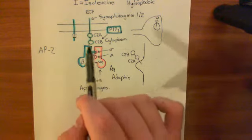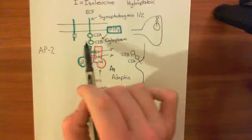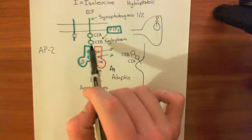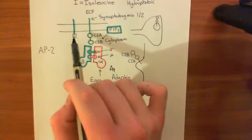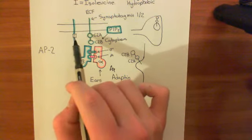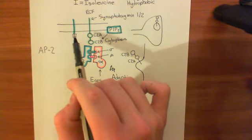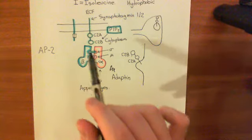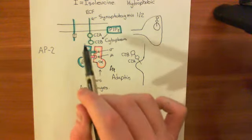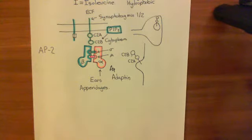The adaptor protein 2 is recruited to the membrane via an interaction with the C2B region of synaptotagmin. The adaptor protein complex, when it comes into contact with the endocytic motif, will then bind to the endocytic motif of this target protein. So you'll now have this adaptor protein complex bound both to the synaptotagmin and to the endocytic motif of the target protein.